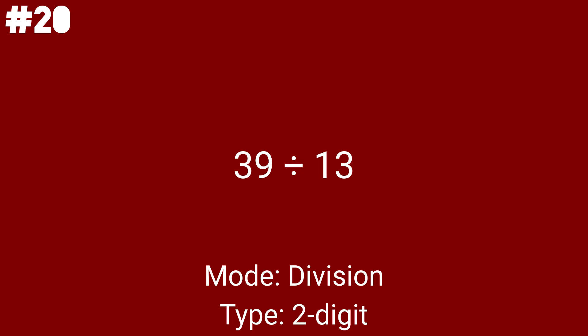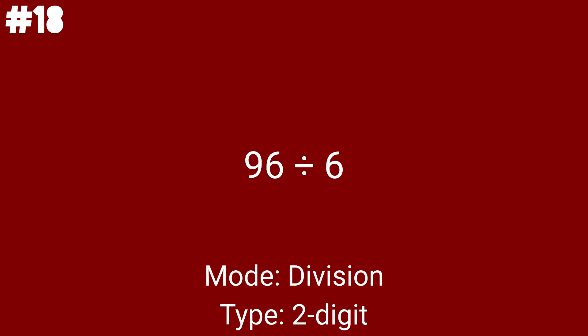39 divided by 13 is the 6th division problem. Sorry, the multiplication problems are over — I meant the 6th division problem. We all make mistakes. 20 divided by 4 is the 37th problem overall and the 7th division problem. If you're at least a 2nd grader, you will remember this. 96 divided by 6 is problem number 38 and the 8th division problem. Problem 36 is the only division problem so far to have a 2-digit divisor.